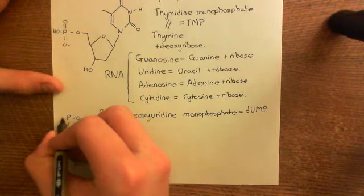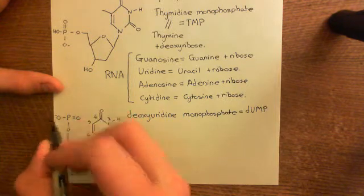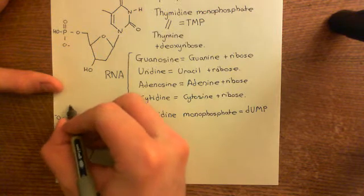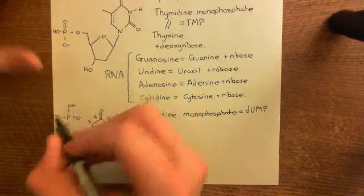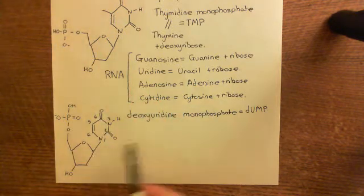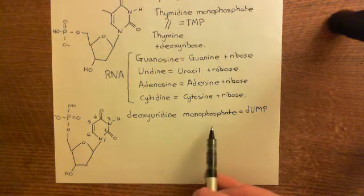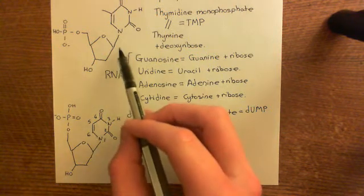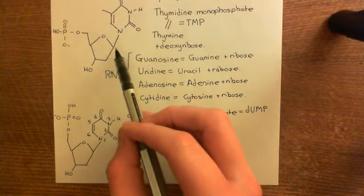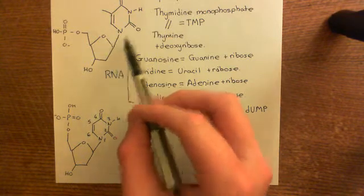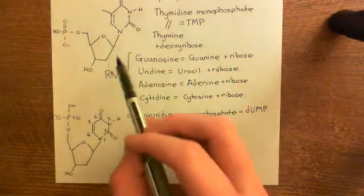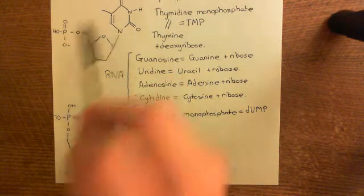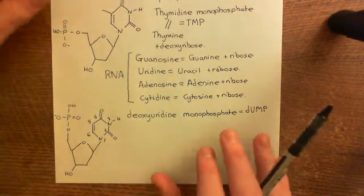Here's our phosphorus atom, here's our double bond to an oxygen and our single bond to an oxygen, and then we have our alcohol group on the end. So this is deoxyuridine monophosphate. You can see that this is almost identical to our thymidylate molecule — our thymidine monophosphate. All we need to do is add this methyl group on.